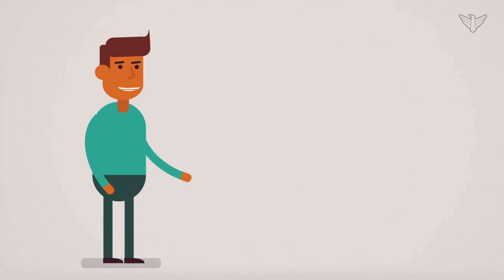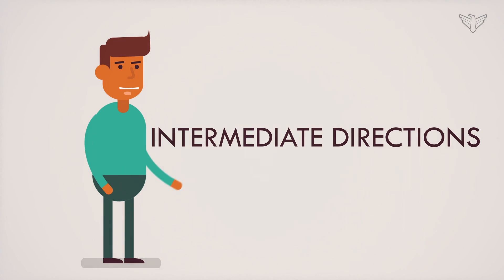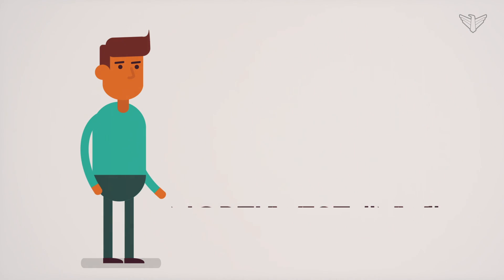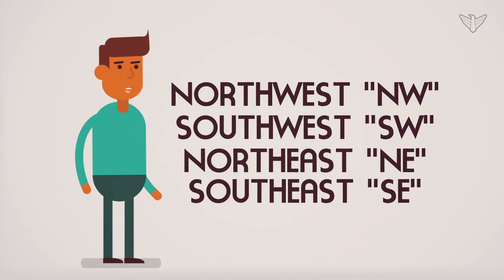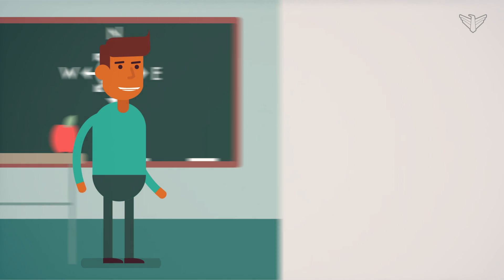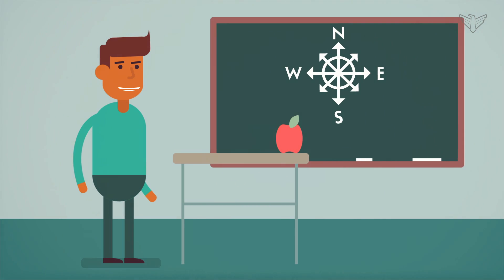She explained that northeast is one of the intermediate directions. There are four intermediate directions: northwest, southwest, northeast, and southeast. She drew a compass rose on the board to show us where they are found.